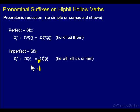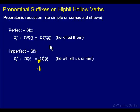Here, our qamets, which is the prefix vowel we have for the imperfect, reduces to a sheva. And the tsere, the prefix vowel for the perfect — remember, the Hiphil hollows have tsere, at least in the third person. If you go into the second person, you have the chataf patah, like hakimoti or whatever. But in the third person, you have tsere for the Hiphil, and that reduces to a chataf segol, or a compound sheva.